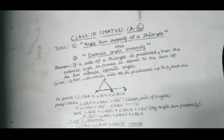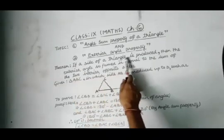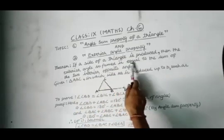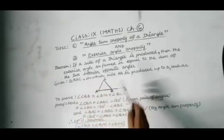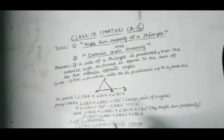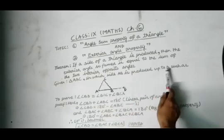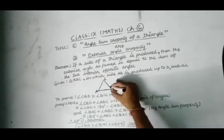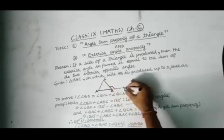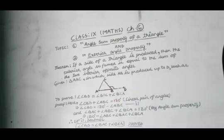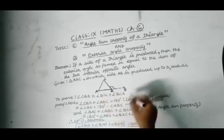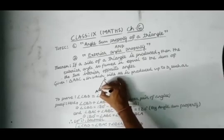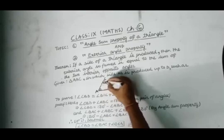Let's move on to the second topic: exterior angle property. We have a theorem which states that if a side of a triangle is produced, then the exterior angle so formed is equal to the sum of the two interior opposite angles. We are given a triangle ABC in which one of its sides, AB, has been produced up to point D. The exterior angle formed is angle CBD, and we have to prove that angle CBD equals the sum of its two interior opposite angles — that is, angle BAC plus angle BCA.